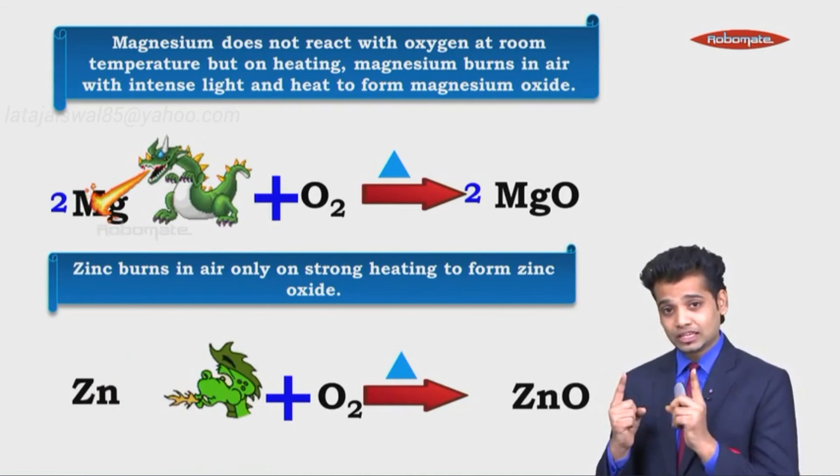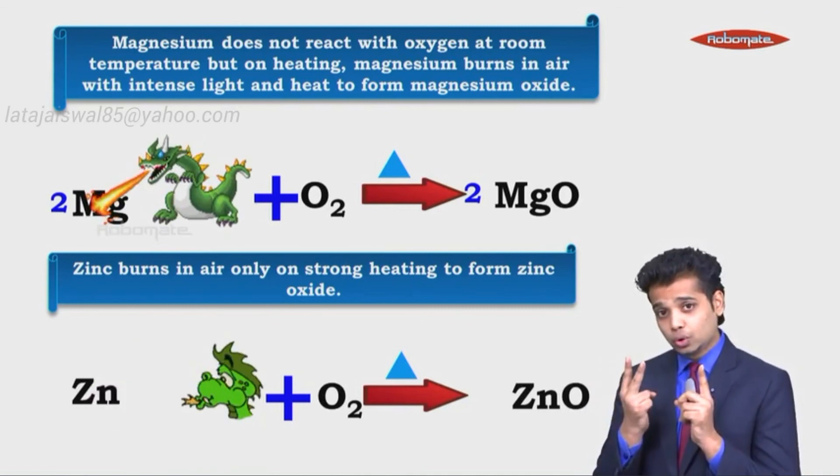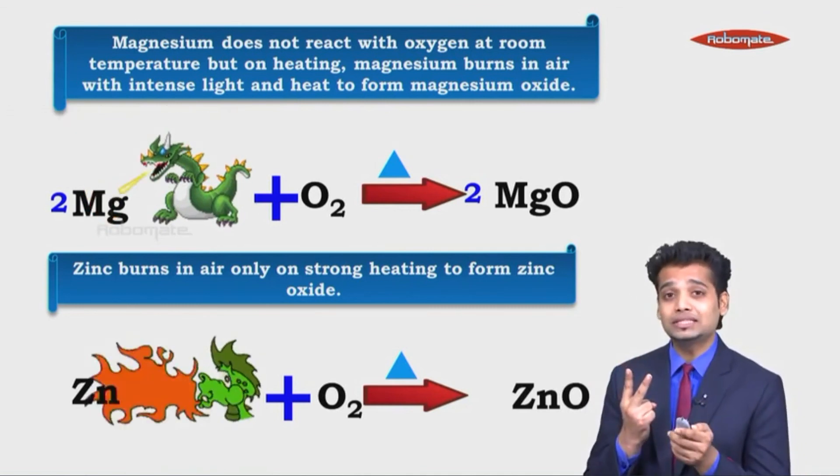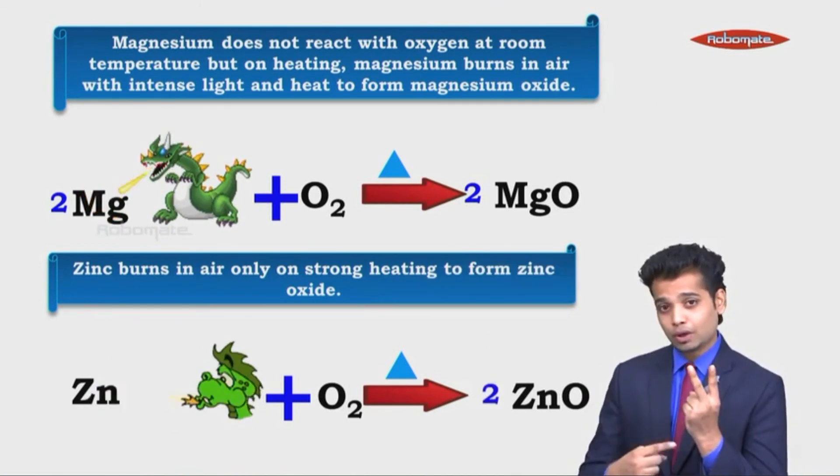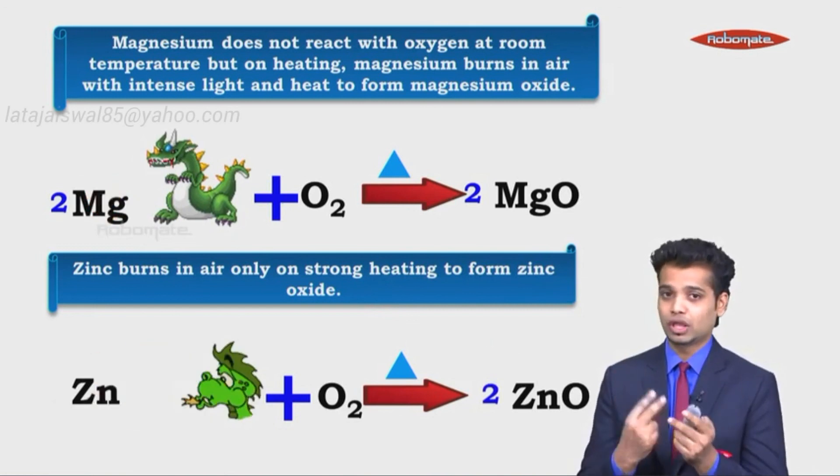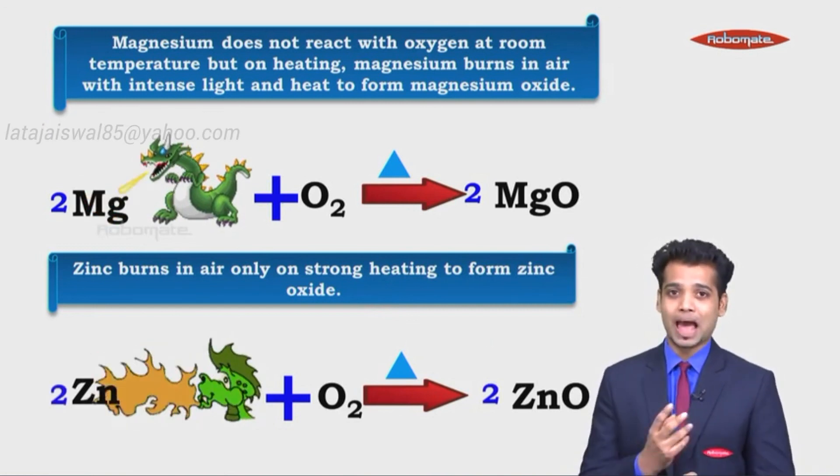Zn is 1, Zn is 1. O is 2, O is 1, so you multiply ZnO by 2. When you do that, zinc becomes 2, so you multiply 1 zinc by 2. The reaction becomes balanced.